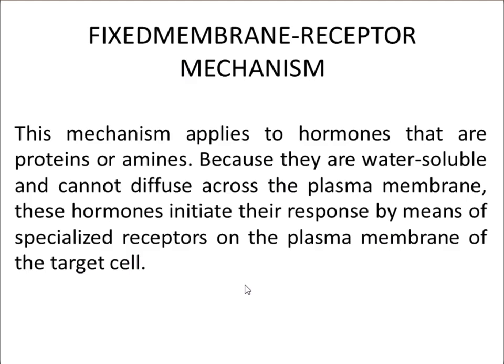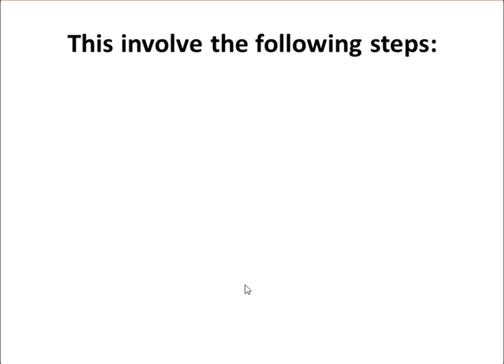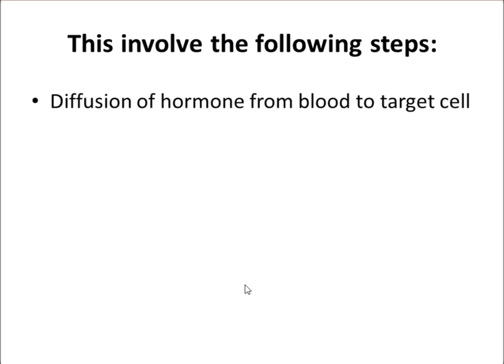It is called the fixed membrane mechanism because the hormones cannot enter into the cells, as they are water soluble. The plasma membrane is composed of phospholipids, making it difficult for water-soluble hormones to cross. They perform their action through specialized receptors present on the plasma membrane surface, which bind the hormone and then initiate the enzyme present inside the cell. The first step involves diffusion of hormones from the blood to the target cells on the plasma membrane surface.